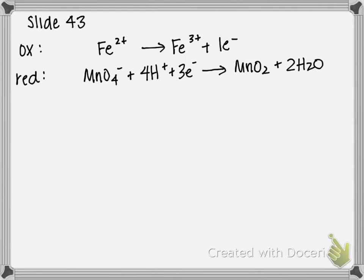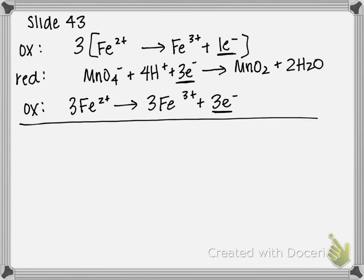Now our next step is to make sure that the electrons between the two half reactions are equal. So I'm going to multiply my iron half reaction by 3, so that I get total 3 electrons being transferred. So if I rewrite my oxidation, it's 3 Fe²⁺ gives you 3 Fe³⁺ plus 3 electrons. And now we have balanced those two.